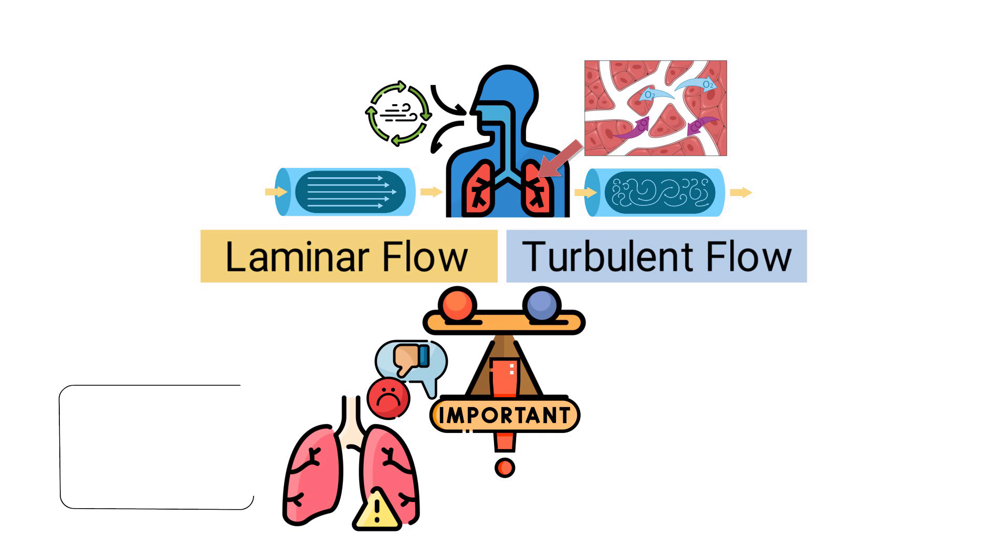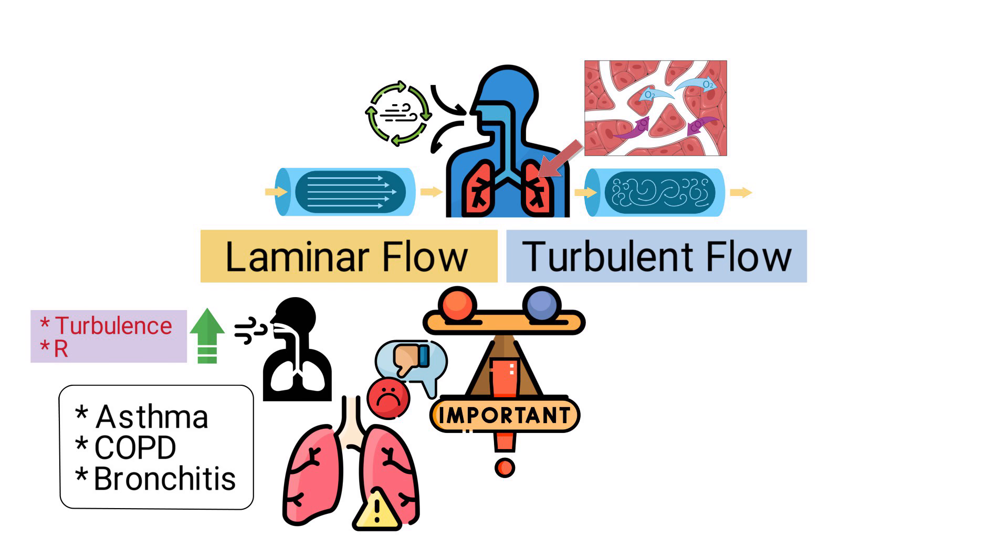For example, conditions like asthma, COPD, and bronchitis can alter the characteristics of the airways, leading to increased turbulence and resistance, which can impede airflow and reduce the efficiency of gas exchange.